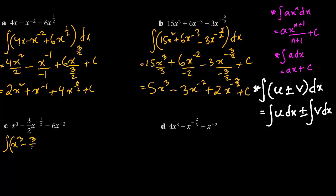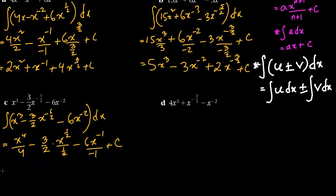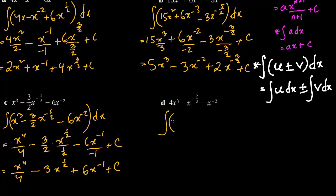Next, we integrate x cubed minus 3 by 2 x to the power minus half minus 6x to the power minus 2, dx. This gives x to the power 4 by 4, minus the constant 3 by 2 times x to the power minus half plus 1 is half, divided by half, minus 6 times x to the power minus 2 plus 1 is minus 1, divided by minus 1, plus c. Simplifying: x to the power 4 over 4, minus 3 by 2 divided by half gives 3x to the power half, and the minus over minus 1 cancels to give plus 6x to the power minus 1, plus c.